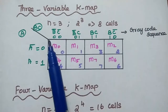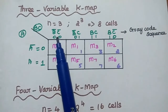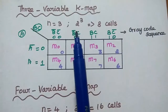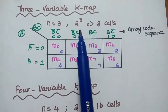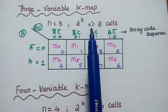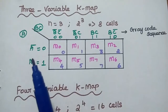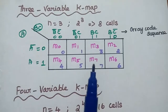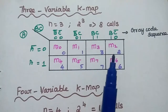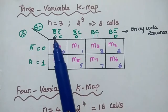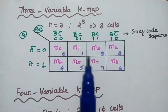Next is the 3-variable K-map, where n equals 3. Therefore there are 8 cells — 2 to the power 3 equals 8. Here, A is the row variable and BC are the column variables. Whenever we are grouping two bits together, we have to consider the Gray code sequence.